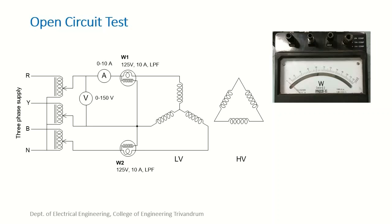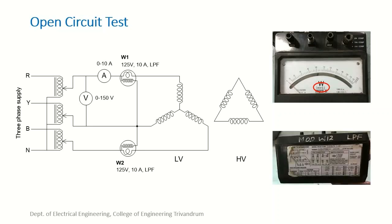Now we shall look into the actual test setup for the open circuit test. The wattmeter used in this experiment is of LPF type — it is written on the dial as cos phi equals 0.2, which is the indication that it is an LPF meter. Both wattmeters used here should be of LPF type. We also have to take care about the multiplication factor, which depending on the connections made can be found to be 1 for this case.